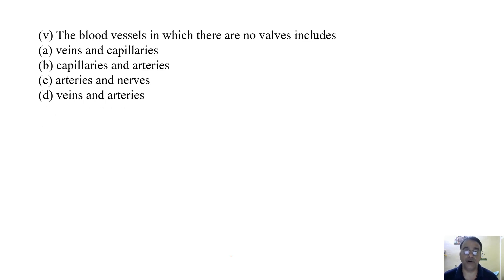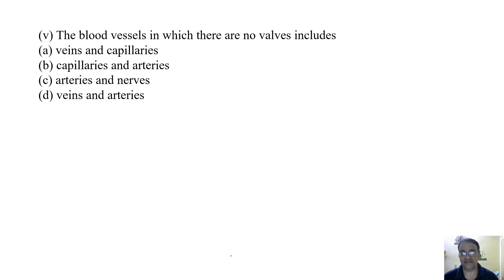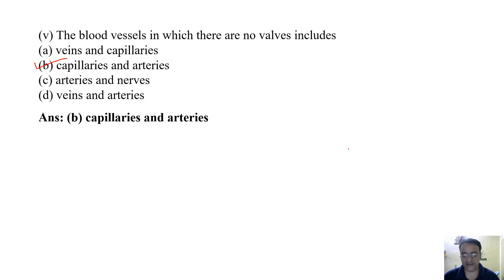Question 5: The blood vessels which have no thick walls include — the options are veins and capillaries, capillaries and arteries, arteries and nerves, or veins and arteries. The correct answer is capillaries and arteries. This is the last question of this case study. We'll see the next case study question in the next video. Thank you.